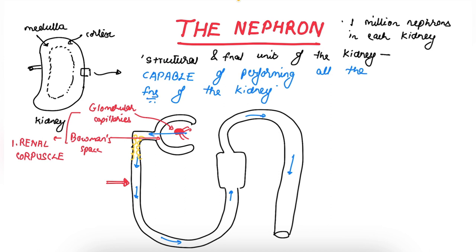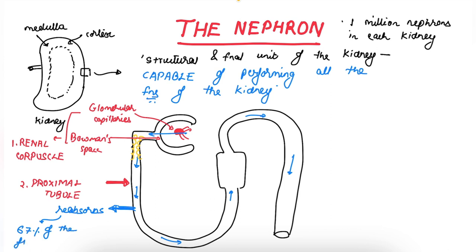The first part of the nephron is known as the proximal tubule, which is highly suited for reabsorption. It reabsorbs 67% of the filtered load of sodium, potassium, chloride, and bicarbonate — 67% of the filtered load of these important electrolytes. It also reabsorbs virtually all the glucose and amino acids.